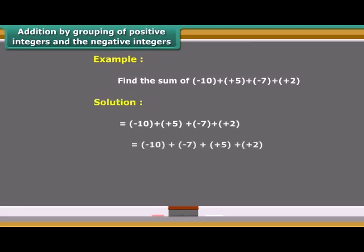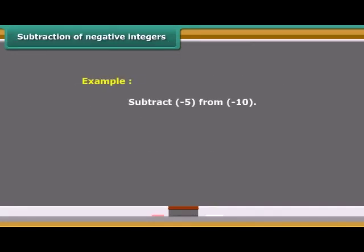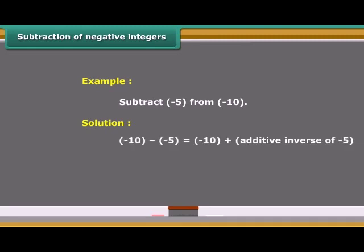For better understanding, we can solve one example. We arrange the numbers so that the positive integers and the negative integers are grouped together. Now let us find the value of minus 10 minus minus 5 using a number line. This is the same as minus 10 plus 5, as the additive inverse of minus 5 is 5. First, we move five steps to the right on the number line starting from minus 10. We reach minus 5.